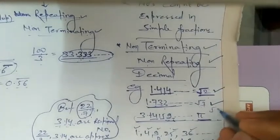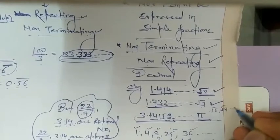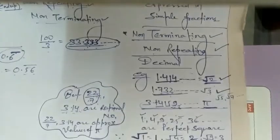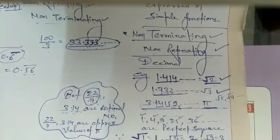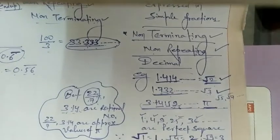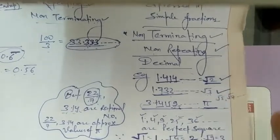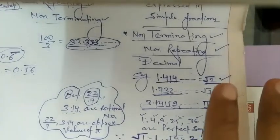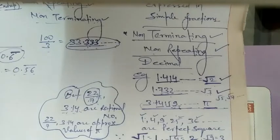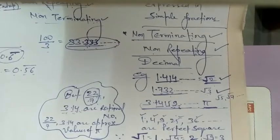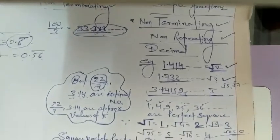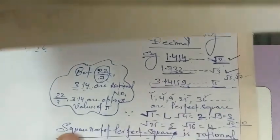Some more examples of irrational numbers: under root 5, under root 7, and under root 8 are all irrational numbers. Thank you — I hope you have understood this. I will next teach you question number 1 of exercise 1.5, and then hopefully you will understand the concept very clearly.